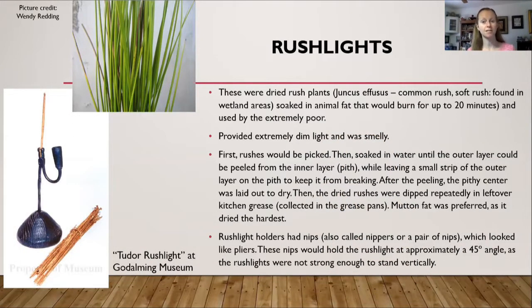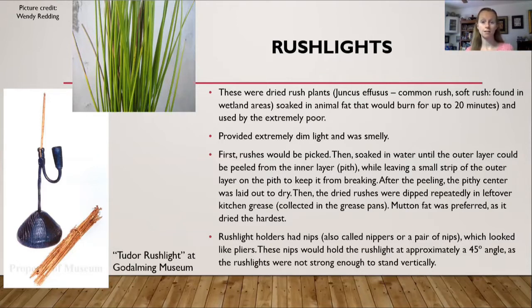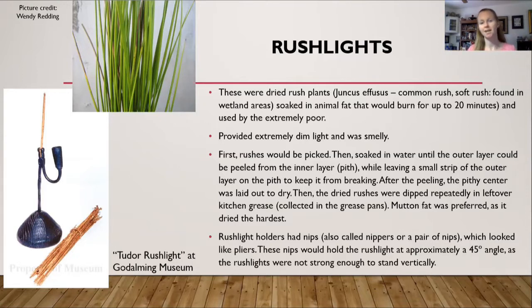Which brings us to rush lights. Rush lights were used during the medieval period on up into the Victorian period, and they were used by the poorest of the poor. What you would do is send a child out to pick rush plants. The rush plants were then soaked in water with the outer layer peeled off and then dried. After drying, you would repeatedly dip the pith — the inner layer — in tallow, or animal fat, which was fat collected in the kitchen from cooking grease.